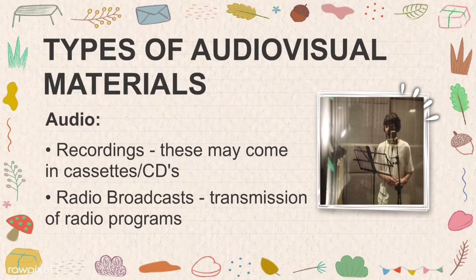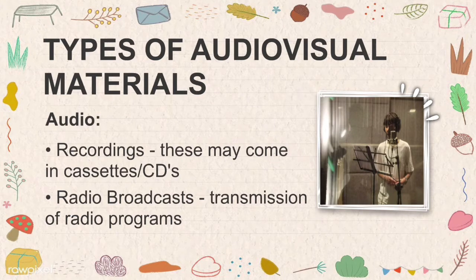The types of audiovisual materials for audio include recordings and radio broadcasts. Recordings may come in cassettes or CDs and are important for the content and evidence of communication, decisions, actions, or history. For radio broadcasts, transmission of programs can be live or taped — these can not only convey information in one existing place but also spread from place to place so everyone can hear news and more.